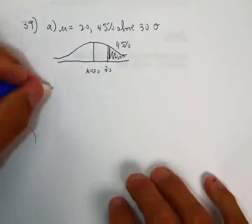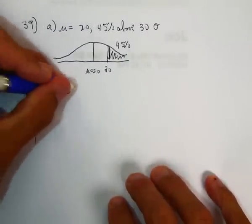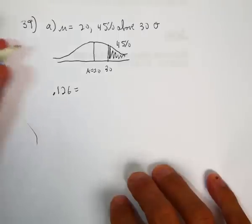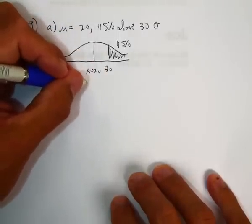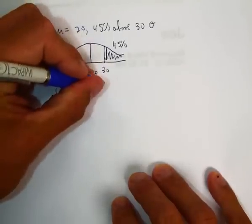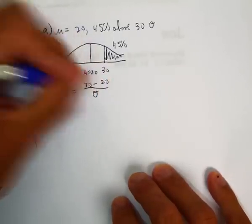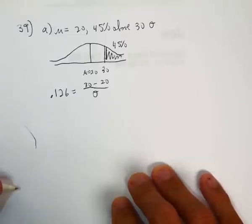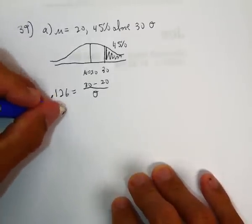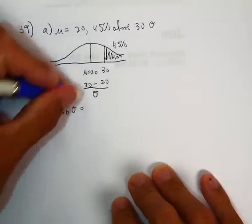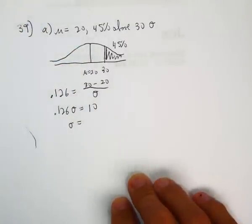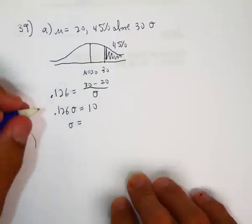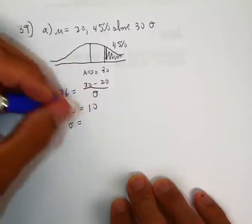So we're going to set up an equation: 0.126 equals x, which would be 30 minus mu over sigma, just using our z-score formula. So if we cross multiply we get 0.126 times sigma equals 30 minus 20, which is 10, and then we divide both sides by 0.126 and we get about 79.4.